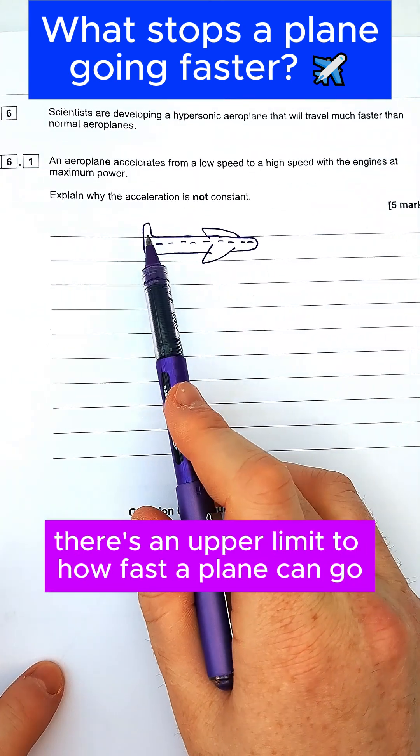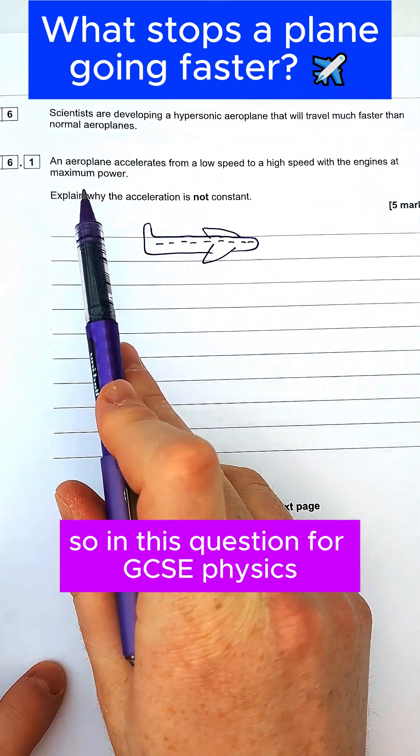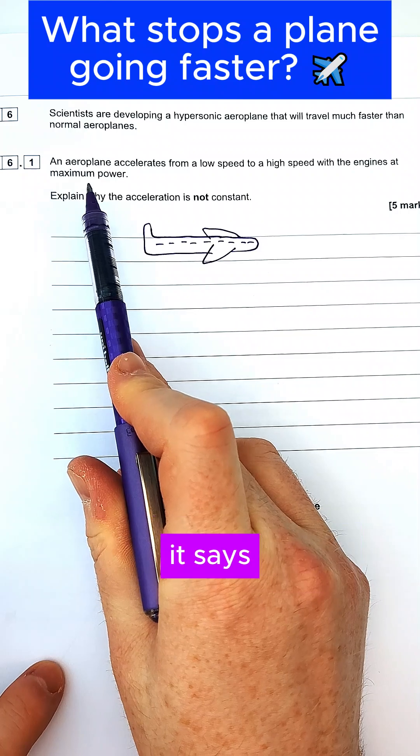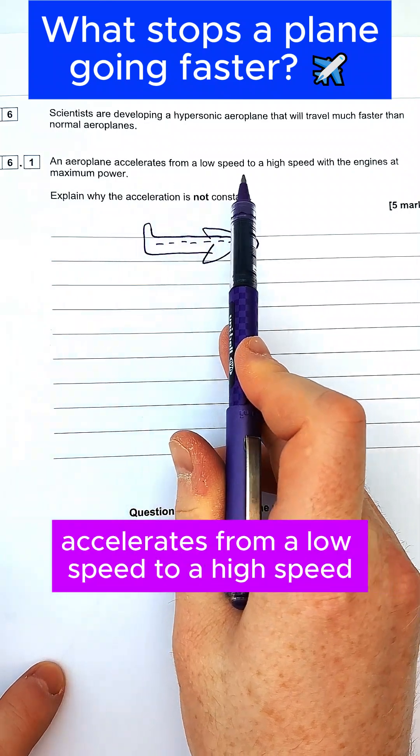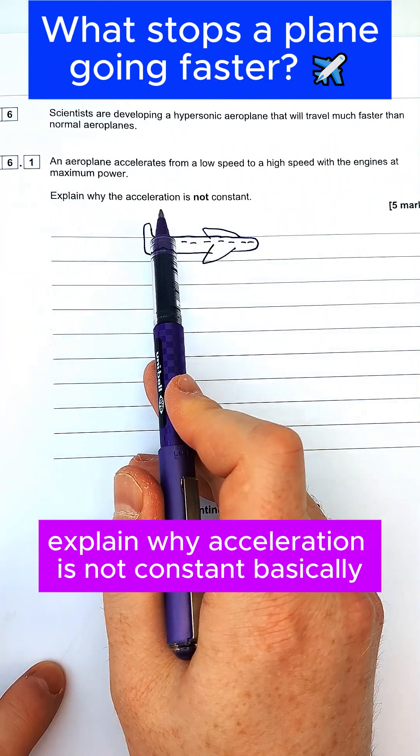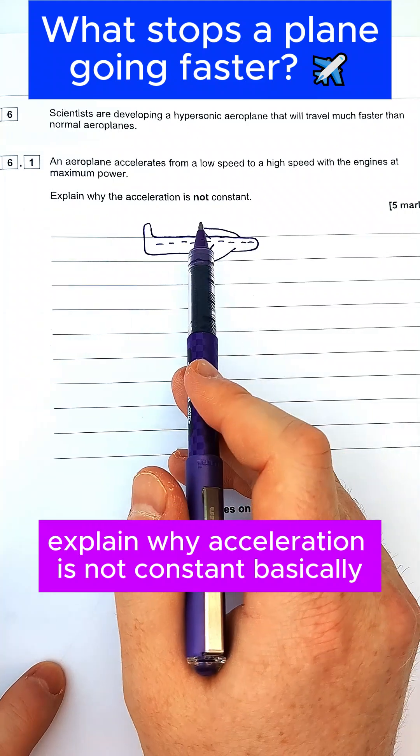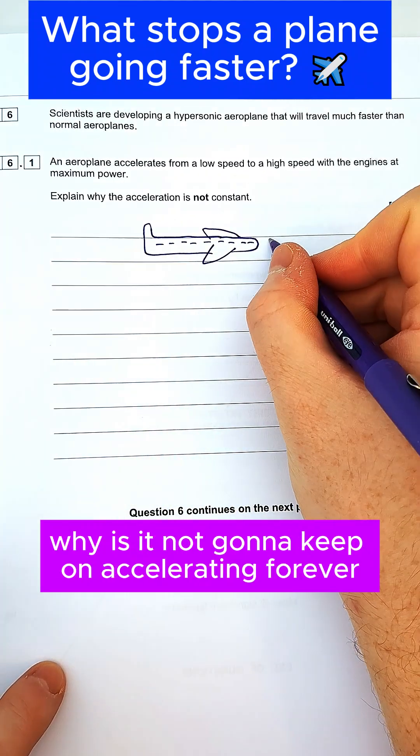Let's talk about why there's an upper limit to how fast a plane can go. In this question for GCSE physics, it says an airplane accelerates from a low speed to a high speed with the engine at maximum power. Explain why acceleration is not constant - basically why is it not going to keep on accelerating forever.